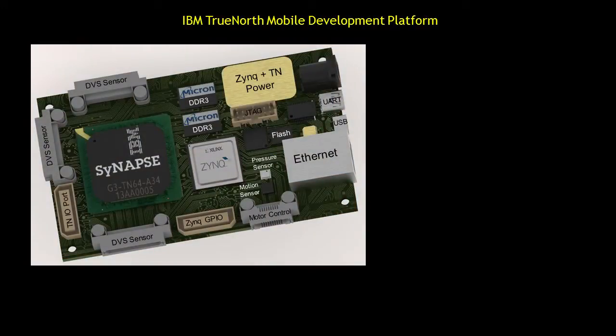Let's take a closer look at this board. On the left you see the TrueNorth Synapse IBM neuromorphic chip. Next to it on the right is the Zynq SoC system-on-chip, which has two ARM core processors as well as some FPGA fabric. This is mainly used to do transduction between spikes and real-world signals, and can also perform pre-processing and post-processing of data sent to the TrueNorth chip.